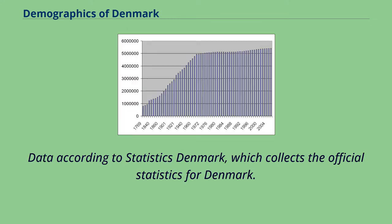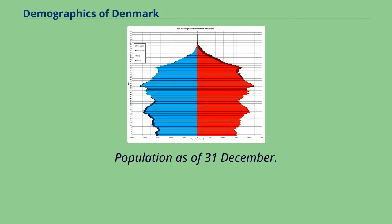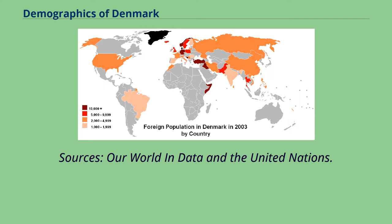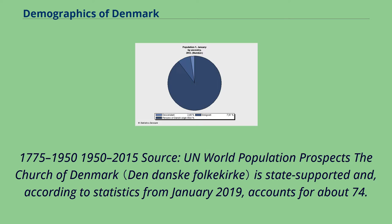According to Statistics Denmark, which collects the official statistics for Denmark, population figures are as of the 31st of December. Sources are Our World in Data and the United Nations. Historical data covers 1775 to 1950 and 1950 to 2015, sourced from the UN World Population Prospects.